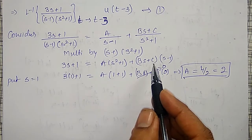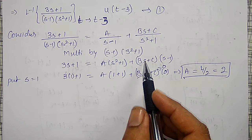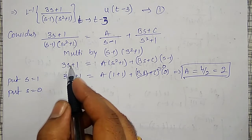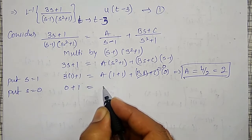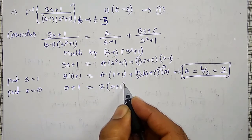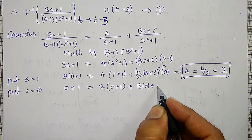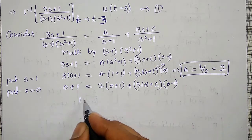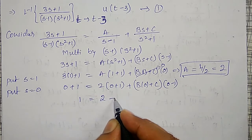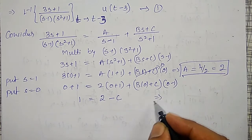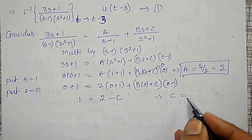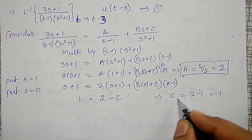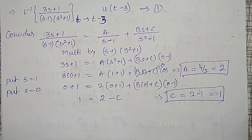To find C, put s = 0 using A = 2. At s = 0: 0 + 1 = 2(0 + 1) + (0 + C)(0 minus 1), which gives 1 = 2 minus C. Therefore C = 2 minus 1 = 1.